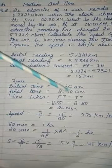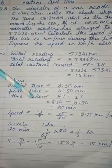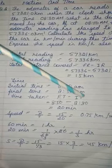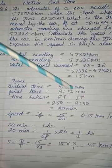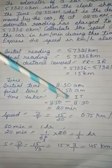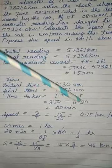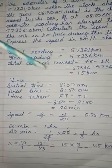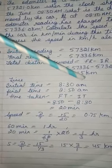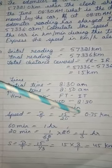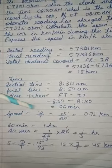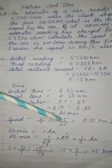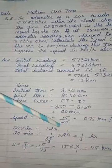Now to find the time: the initial time is 8:30 a.m. and the final time is 8:50 a.m. Time taken equals final time minus initial time, that is 8:50 minus 8:30, which gives 20 minutes. So the distance is 15 kilometers and the time is 20 minutes.